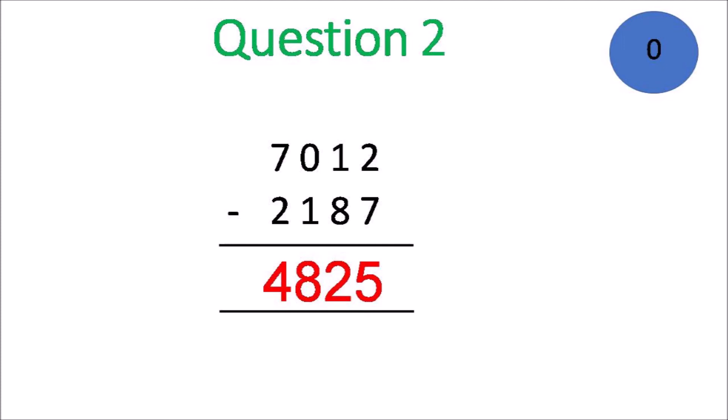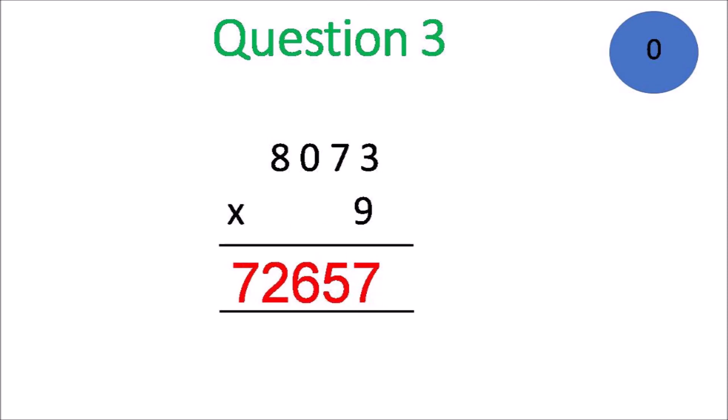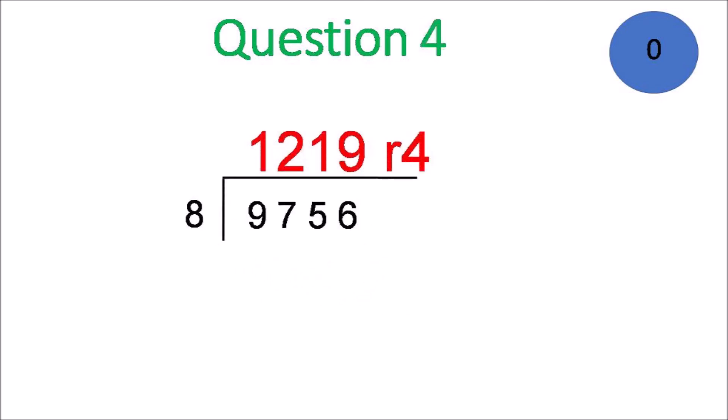Question 3: 72,657. You had to multiply by 9. Question 4, the division answer is 1,219, remainder 4. You have to include the remainder.